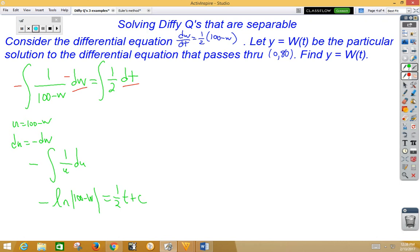So from here, we could then rewrite this as an exponent problem using base e. So we have e to the 1/2 t plus c is equal to negative ln(100-w). Well I can distribute the negative there and get e to the 1/2 t plus c is equal to -100 plus w.